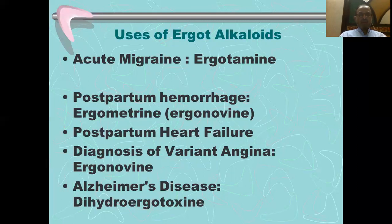The next use is for the management of postpartum hemorrhage, and ergometrine is preferred for this use. It causes uterine contractions which help in reducing bleeding after delivery. It is one of the drugs used for this purpose. However, other drugs like oxytocin may be preferred, but in conditions where oxytocin cannot be given, we may give ergometrine.